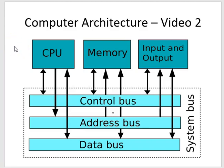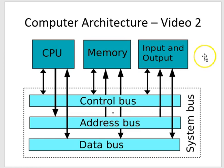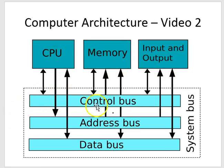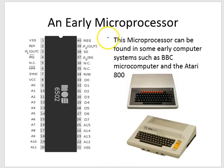Hello, it's Colin here from Grade 8 Computer Science, and welcome to this second video in the series on computer architecture. In the first video we were looking at the internal components of a computer — CPU, memory, input and output, and the three buses which form the system bus: the control bus, the address bus, and the data bus. It's useful to know those six components.